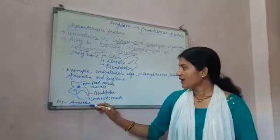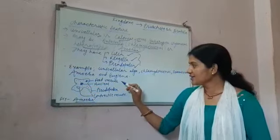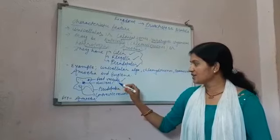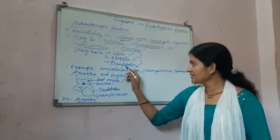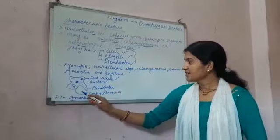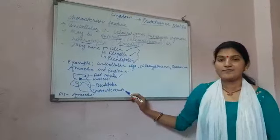This is the figure of amoeba. Here you can see food vacuole, nucleus, pseudopodia for the locomotion, and this is contractile vacuole.